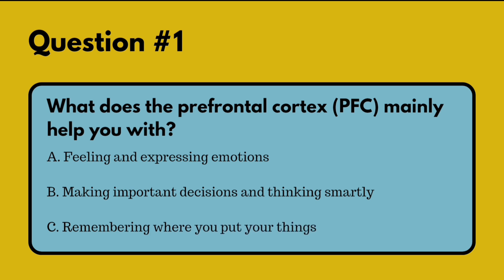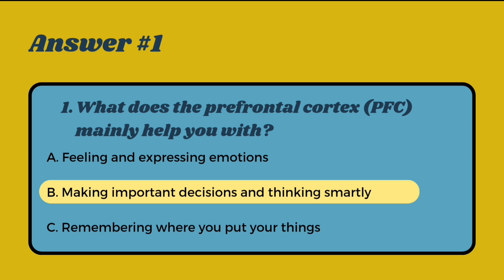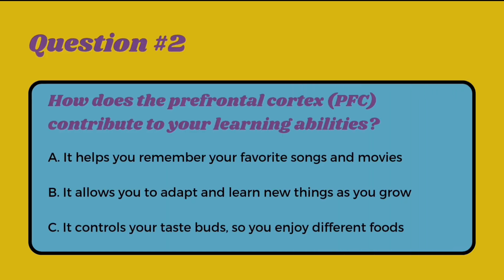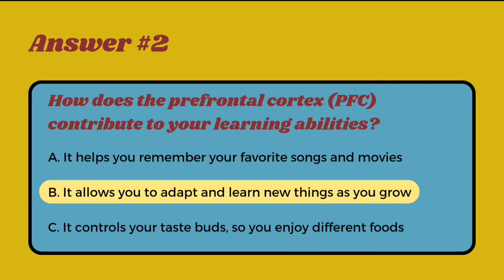Question one: what does the prefrontal cortex mainly help you with? Option A: feeling and expressing emotions. Option B: making important decisions and thinking smartly. Option C: remembering where you put your things. The right answer is B — making important decisions and thinking smartly. Question two: how does the prefrontal cortex contribute to your learning abilities? It allows you to adapt and learn new things as you grow.